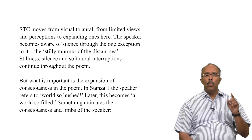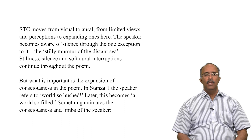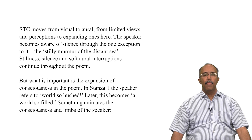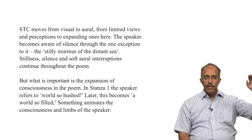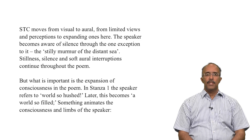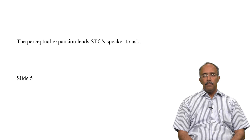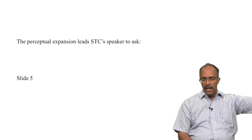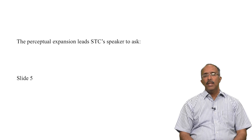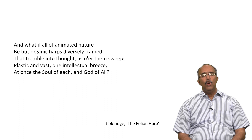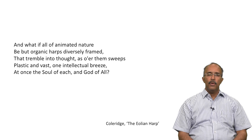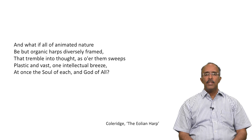The speaker becomes aware of silence through the one exception to it — 'the stilly murmur of the distant sea.' Stillness, silence, and soft aural interruptions continue throughout the poem. What is important is the expansion of consciousness: initially the world is hushed, later it becomes a world so filled — something animates the consciousness. The perceptual expansion from a narrow vision to a field of vision, from limited hearing to something else, from the immediacy of the cottage to the distant sea, leads Coleridge's speaker to ask: 'What if all of animated nature be but organic harps diversely framed, they tremble into thought, as over them sweeps plastic and vast, one intellectual breeze, at once the soul of each and god of all.'